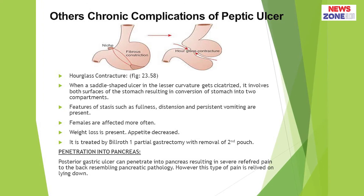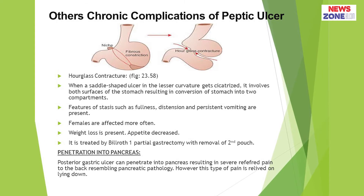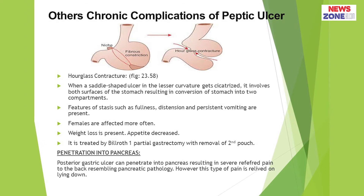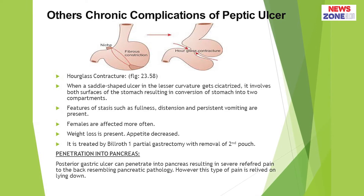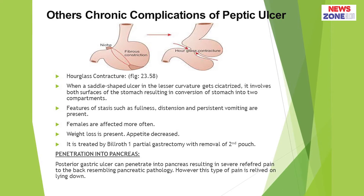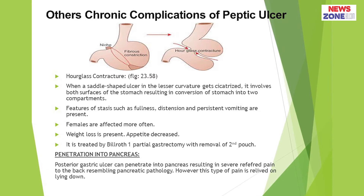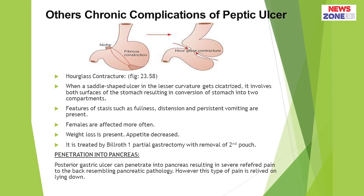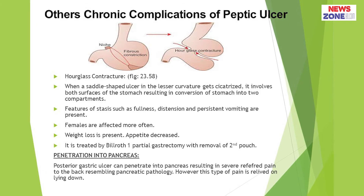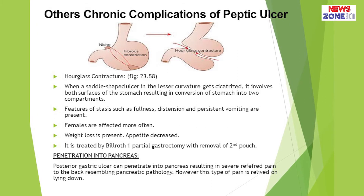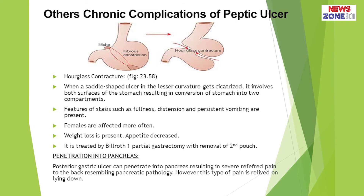Features of stasis such as fullness, distension, and persistent vomiting are present. Females are affected more than males. Weight loss is present and appetite decreases. It is treated by Billroth-1 partial gastrectomy and removal of the second pouch.